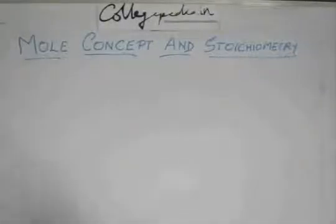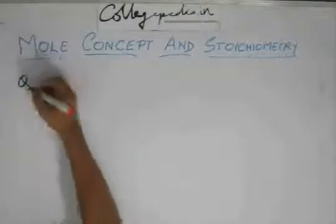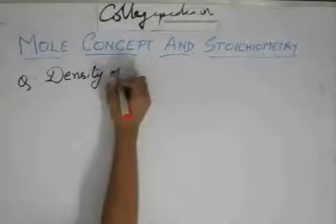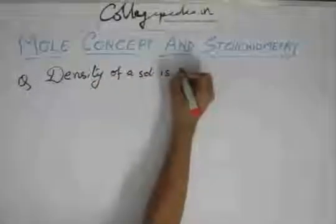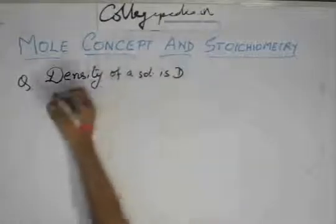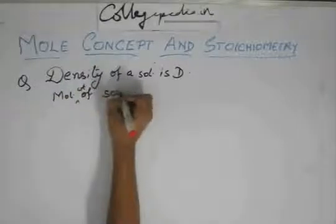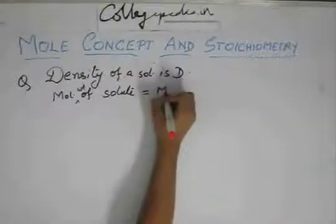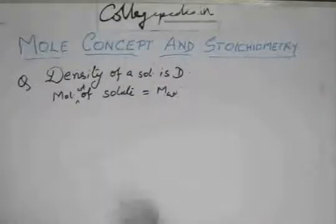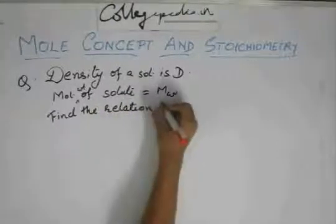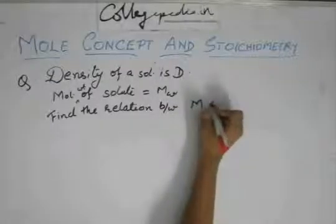Now, you can have an unlimited number of questions from this topic. Let me generalize the questions. Let's say the density of a solution is d, and the molecular weight of the solute is mw. Then you have to find the relation between molarity and molality, where molarity is capital M and molality is lowercase m.